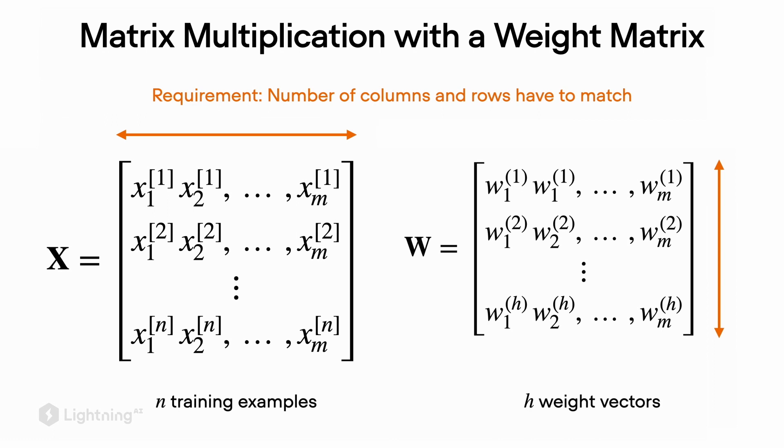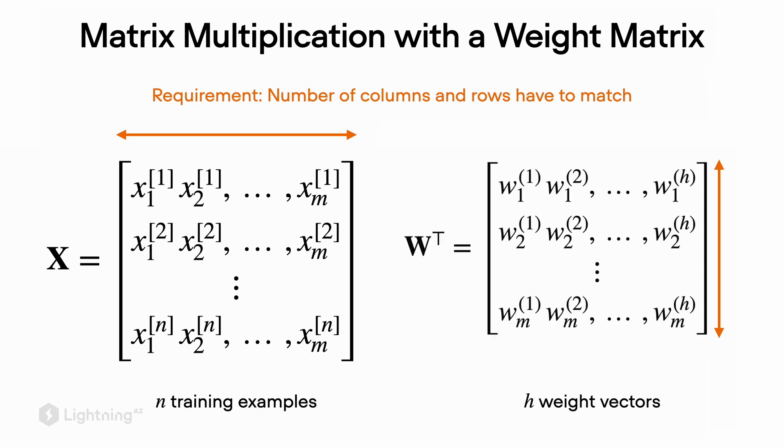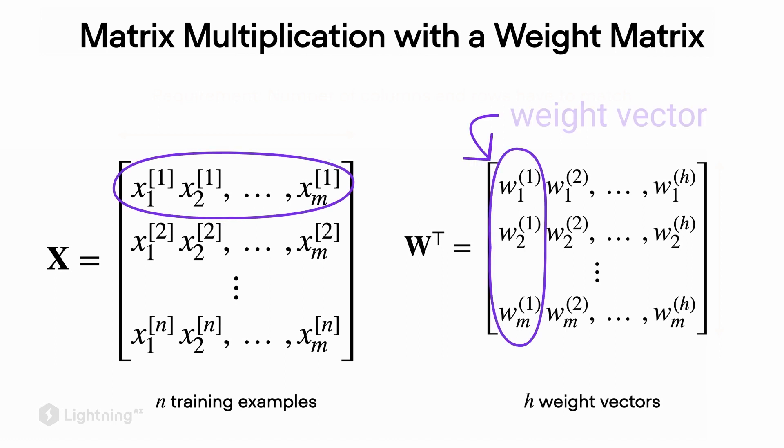What we want to do here is just like before in the previous video, where we compute the dot product between each training example and each weight vector. For that, we transpose the weight matrix so now each column on the right hand side in the weight matrix corresponds to one weight vector. Then just like before, we can compute the dot product between each row in the dataset X and the weight matrix W.